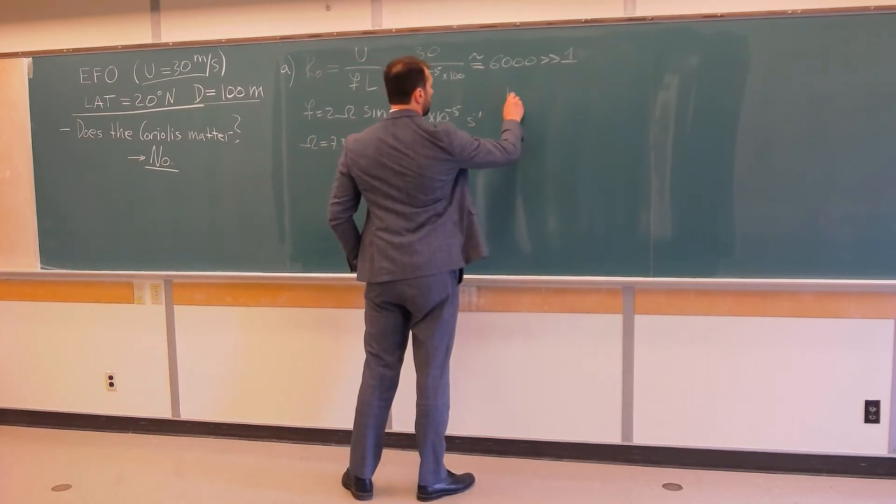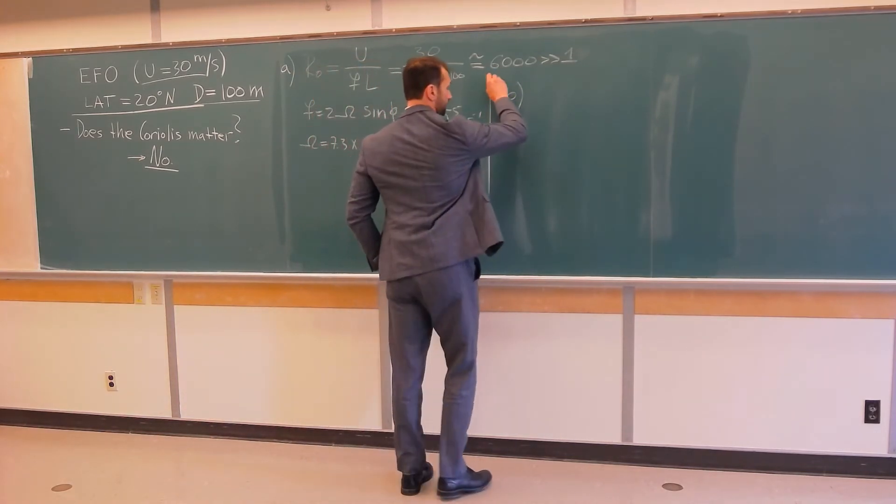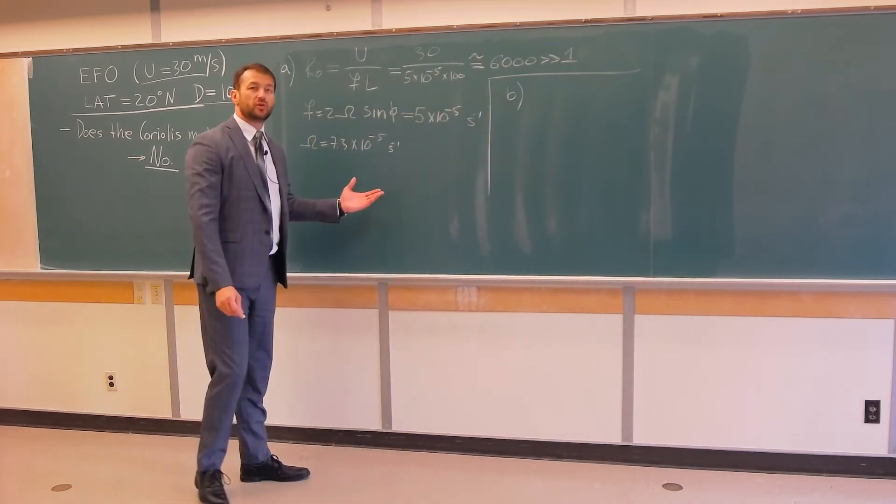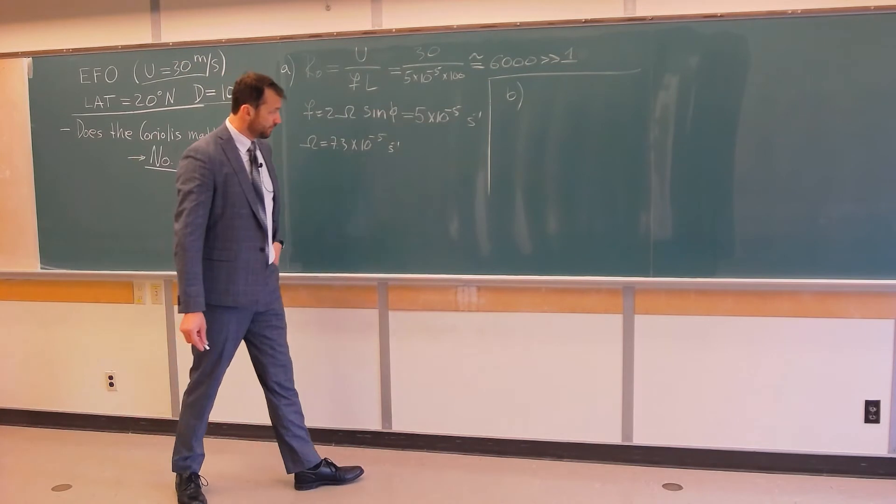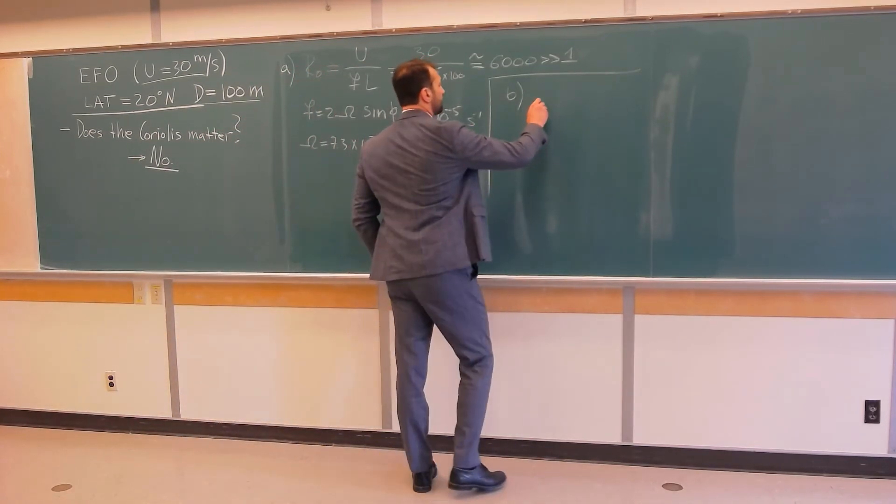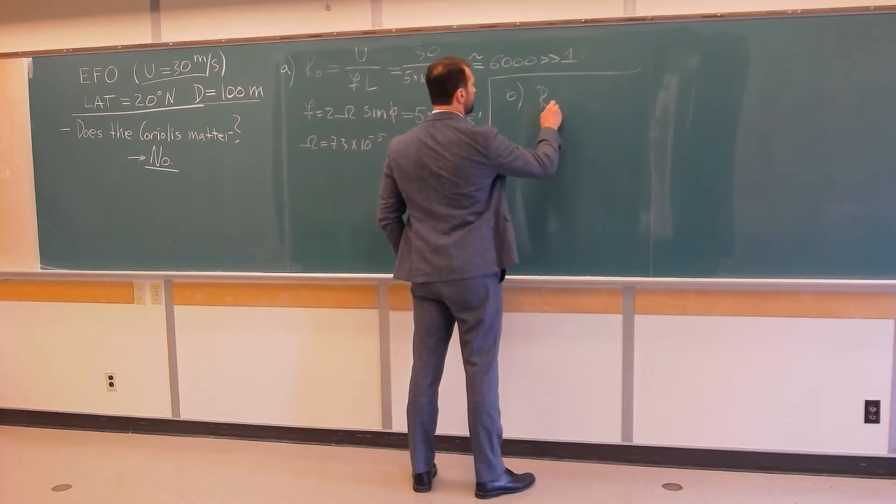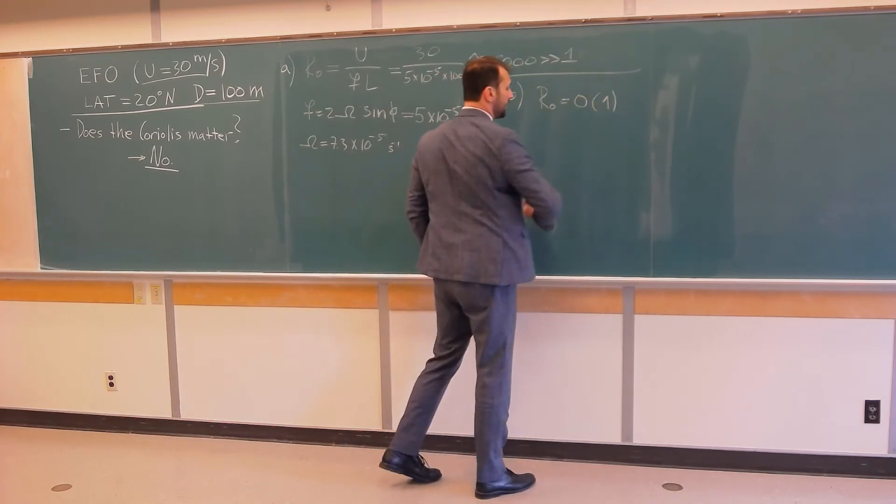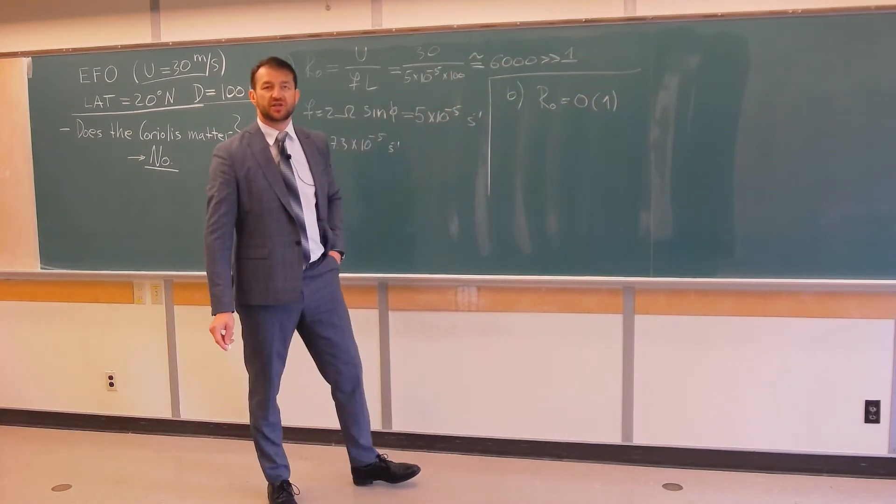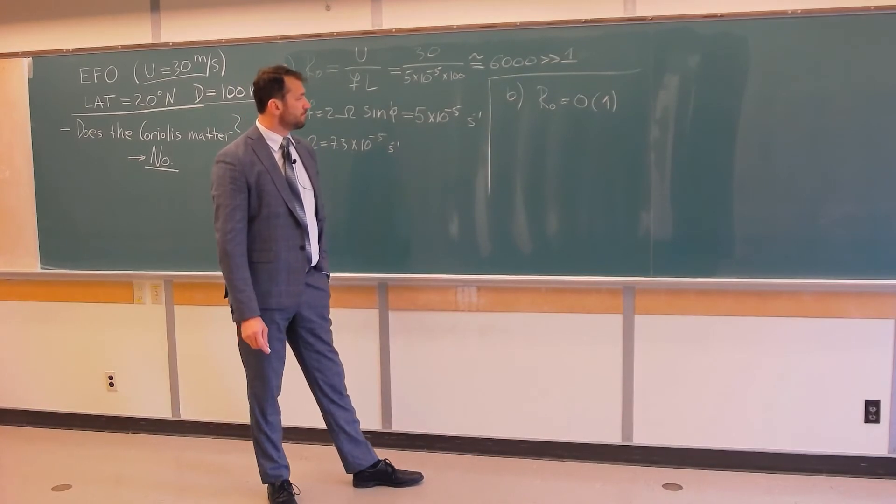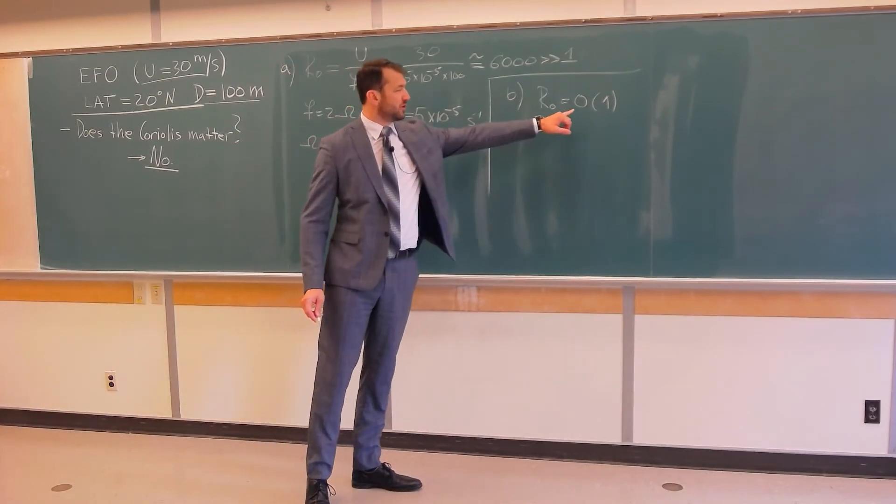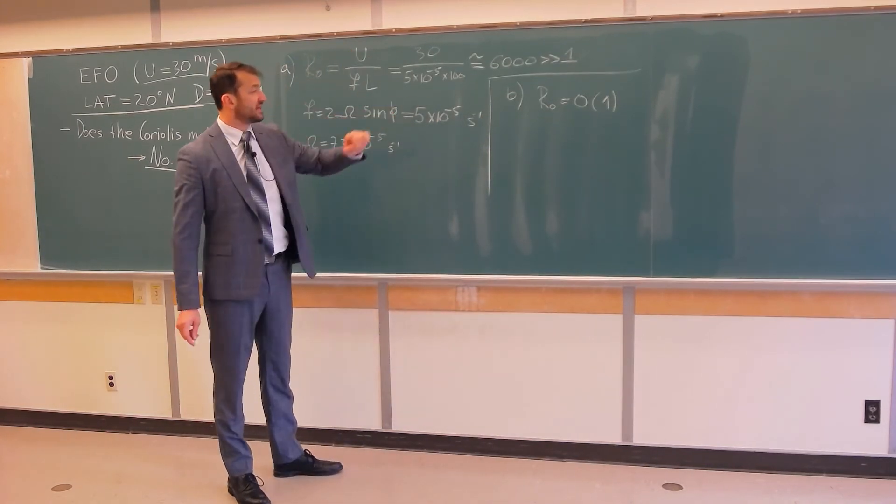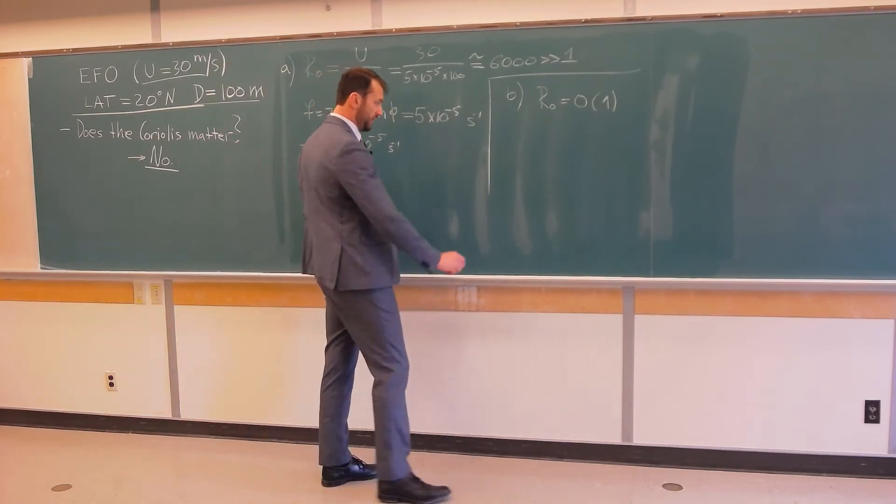Well, we can solve part B here. So, we just go back to the definition of the Rossby number. We can say, if the Rossby number is order of magnitude 1, that means that the Coriolis force is equally important as the inertial forces. And now, taking this order of magnitude value, we can find U that satisfies that value over here.